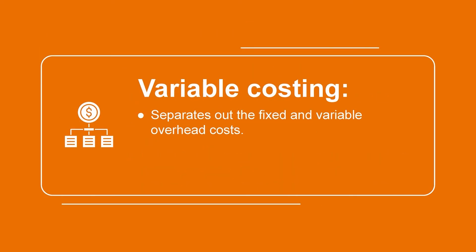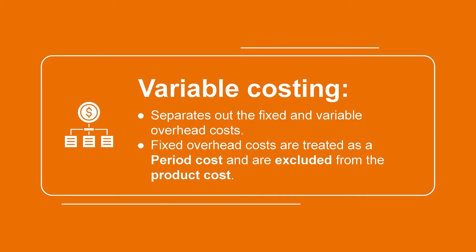Variable costing, on the other hand, separates out the fixed and variable overhead costs. Under this method, the fixed overhead costs are treated as a period cost and are excluded from the product cost. As the name states, variable costing only assigns the variable manufacturing costs, such as direct materials, direct labor, and variable overhead to the product.